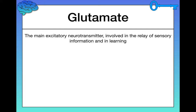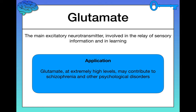Let's start with glutamate. Glutamate is the main excitatory neurotransmitter, and it's involved in a bunch of stuff, including the relay of sensory information and learning. In terms of application, glutamate at extremely high levels can be a very bad thing — it can contribute to the development of schizophrenia and other psychological disorders.